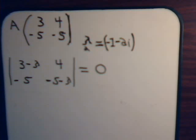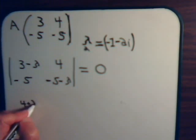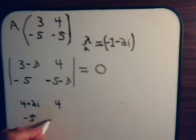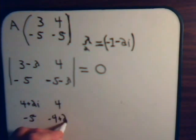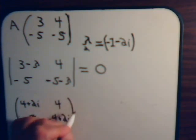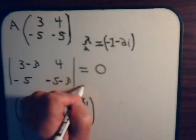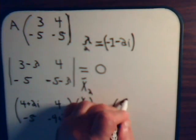Here we have 3 minus this. 3 minus negative 1 is 3 plus 1. That's 4. Then minus negative 2i. That's 4 plus 2i. Minus 5, 4. And minus 5 minus negative 1. That's minus 4. Then minus a negative 2i. That is plus 2i.